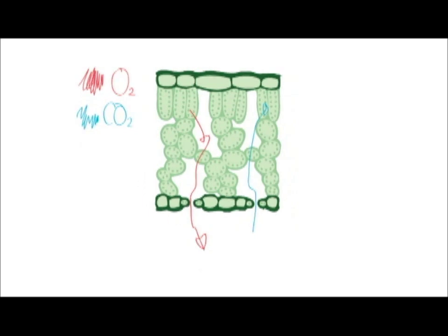In addition to the air spaces, there are other adaptations of the leaf to make diffusion more efficient. For example, no living cell is far away from external air.